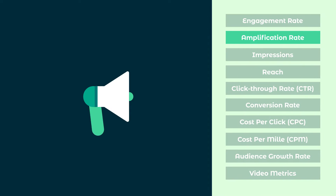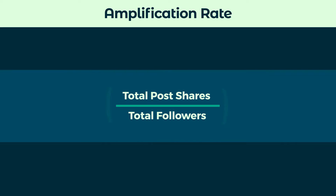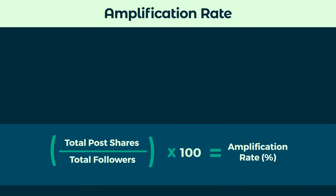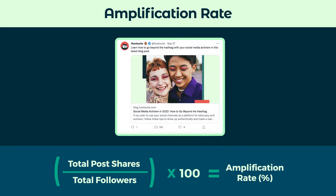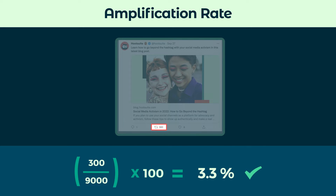Next, amplification rate calculates the number of shares your content gets compared against the number of followers you have. Calculate this by dividing the number of posts shared against your number of followers. Like engagement rate, a high amplification rate probably means you're doing something right with your content.